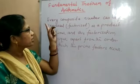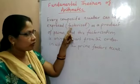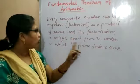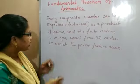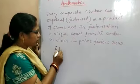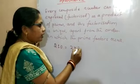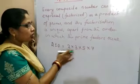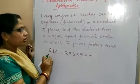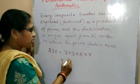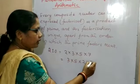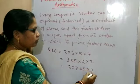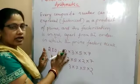The fundamental theorem of arithmetic states: every composite number can be expressed or factorized as a product of primes, and this factorization is unique, apart from the order in which the prime factors occur. For example, 210 = 2 × 3 × 5 × 7, and this factorization is unique. The order may be changed — like 3 × 5 × 7 × 2 or 3 × 7 × 5 × 2 — but the factorization remains unique.